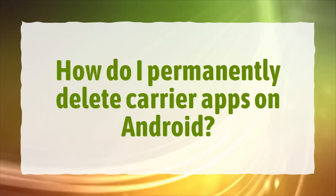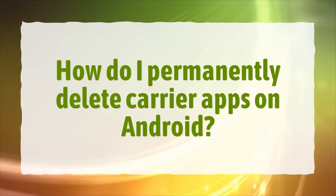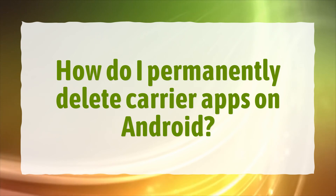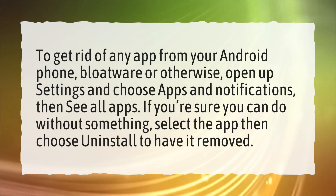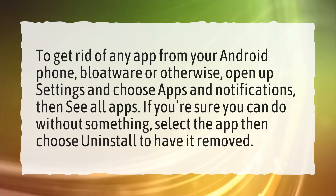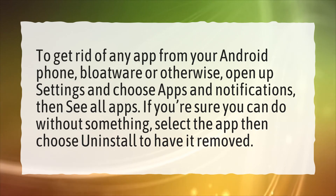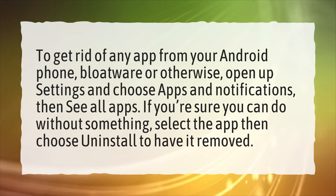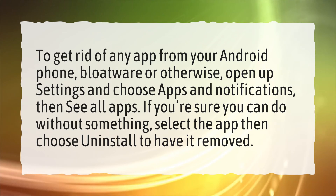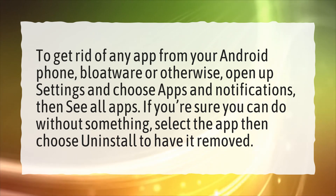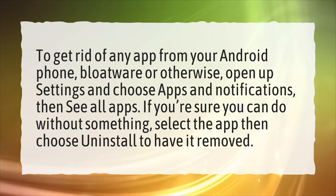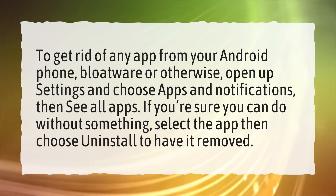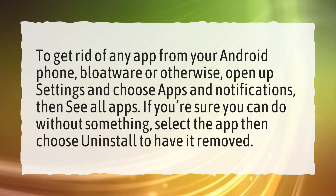How do I permanently delete carrier apps on Android? To get rid of any app from your Android phone — bloatware or otherwise — open up settings and choose apps and notifications, then see all apps. If you're sure you can do without something, select the app, then choose uninstall to have it removed.